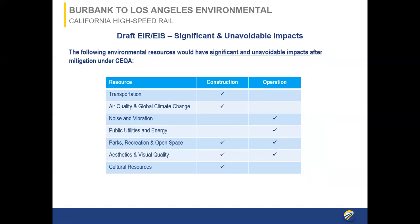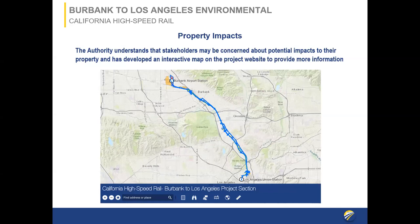There are some significant unavoidable impacts. For noise, in the operational phase where trains are running, there are noise impacts even with mitigation. Sound barriers will be constructed, but there are still some locations that won't receive sufficient protection and noise levels exceed federal standards — that is considered a significant and unavoidable impact. Aesthetics and visual quality is another example: with some structures, views are blocked, and there's only so much screening of those structures that can be done, resulting in a significant and unavoidable visual impact.